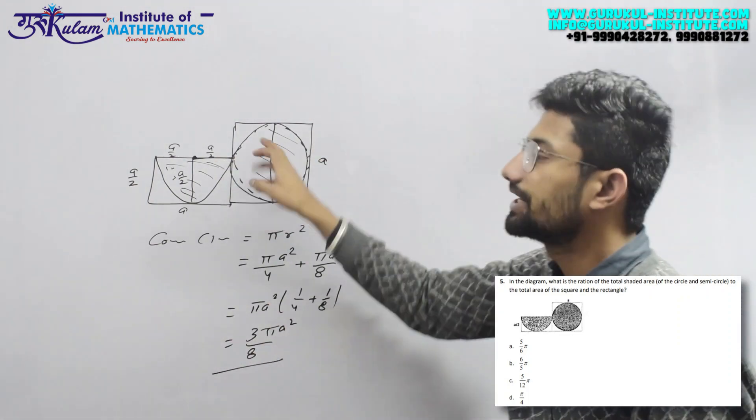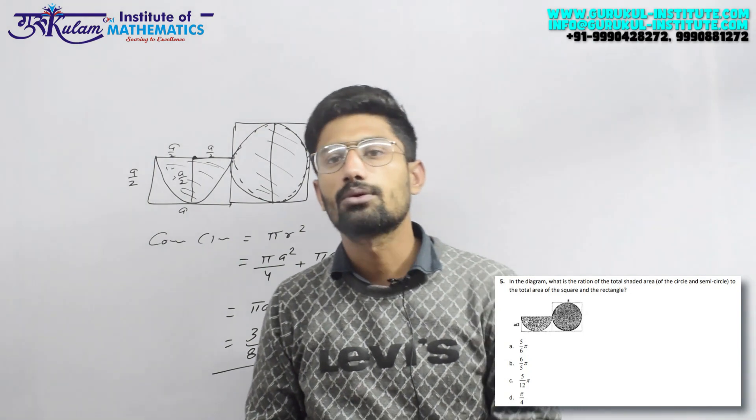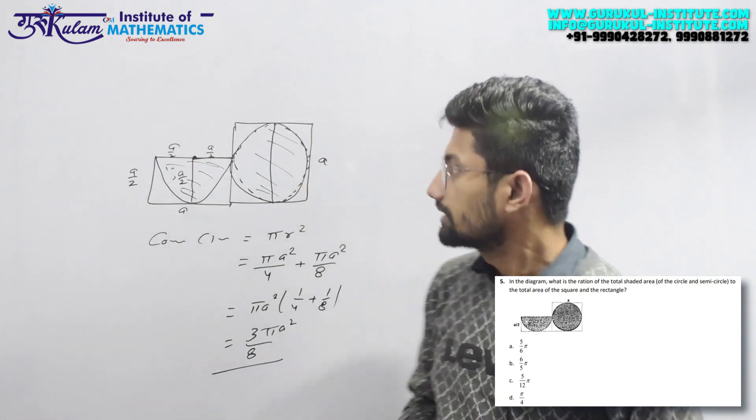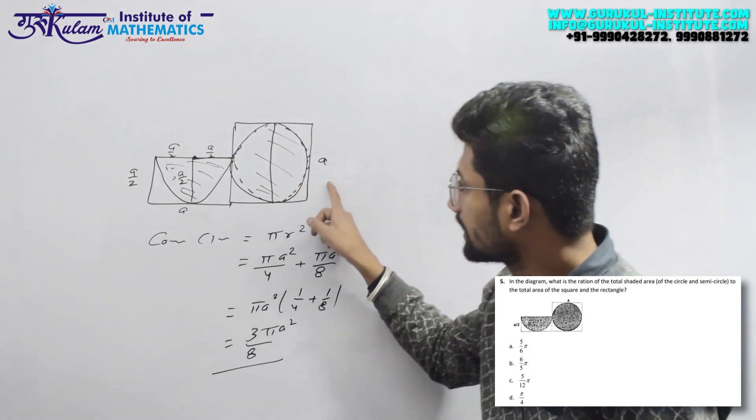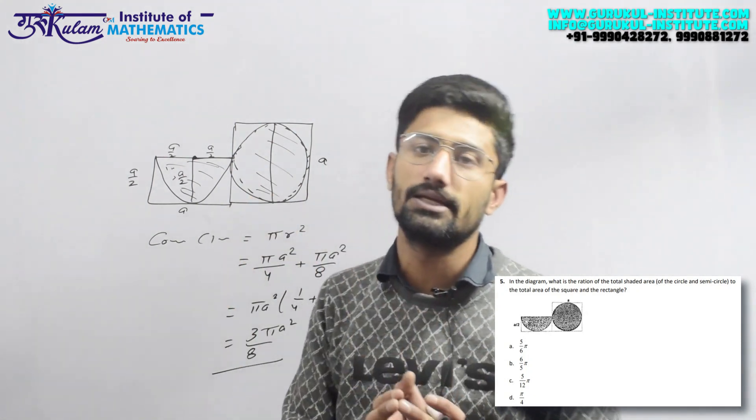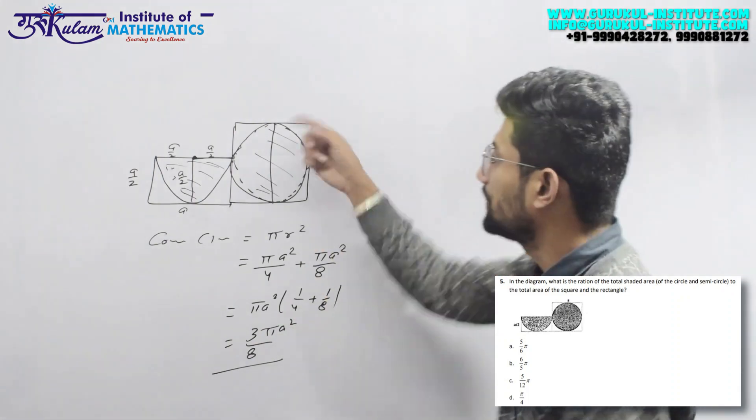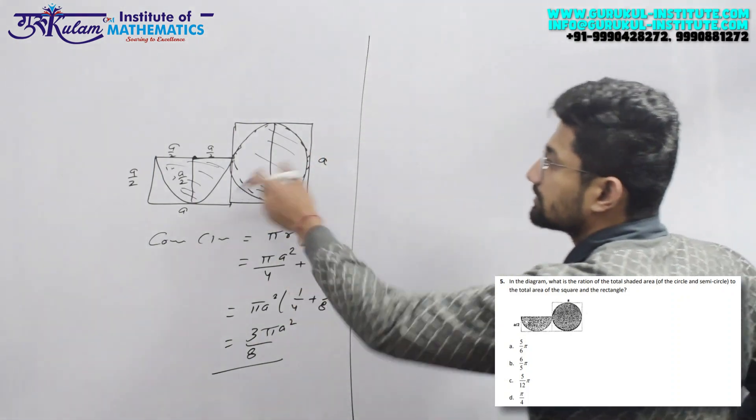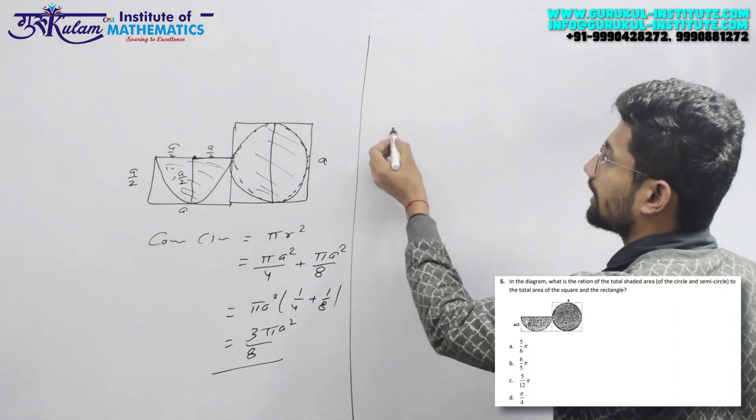यह किसका area आ गया, जो shaded region है। अब मेरे को किसका area calculate करना है, किसके साथ ratio चाहिए? इसके square and rectangle, इन दोनों का जो complete area है, उसके साथ इसका ratio चाहिए।